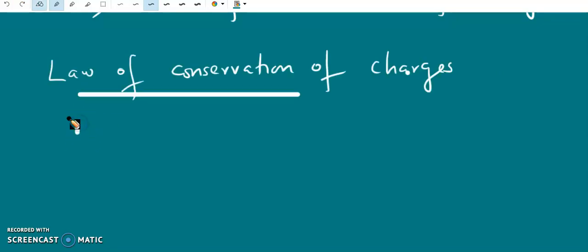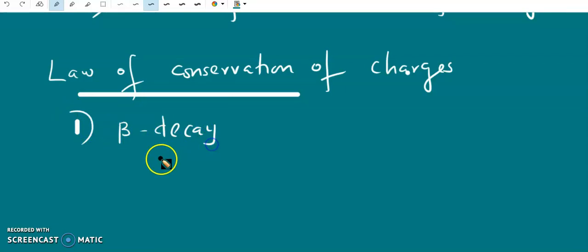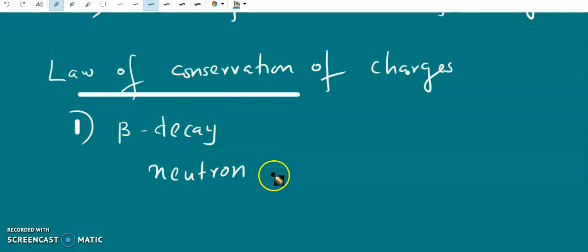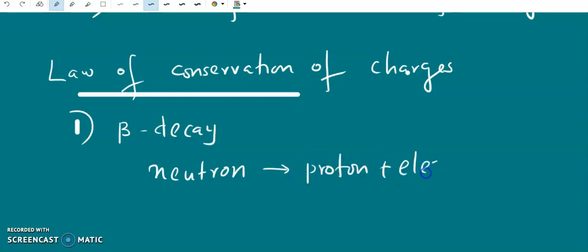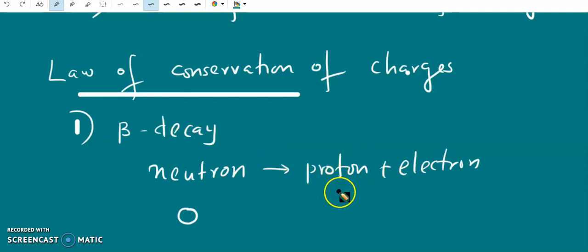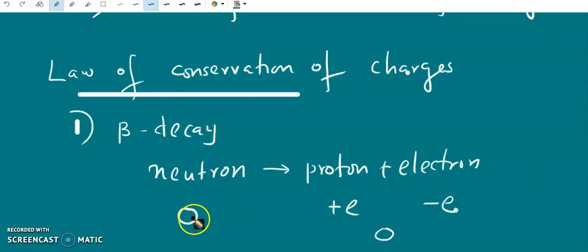We can consider some examples of the law of conservation of charge. The first is the beta decay process. In beta decay, a neutron — which is a chargeless particle — is converted into a proton and an electron. Before the process, there is only one neutron with charge zero. After beta decay, we have an electron plus a proton: the charge of the proton is +E and that of the electron is −E, so the total charge is zero. The total charge before the process is zero and after the process is zero.